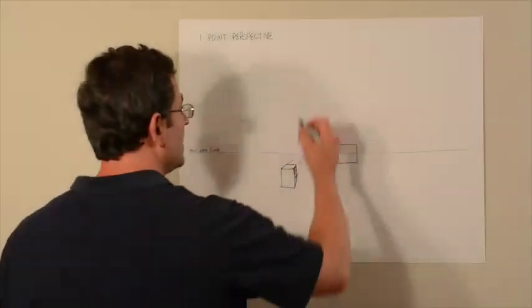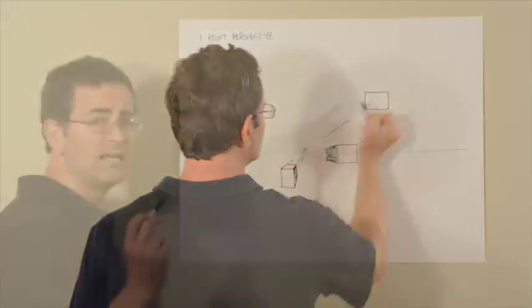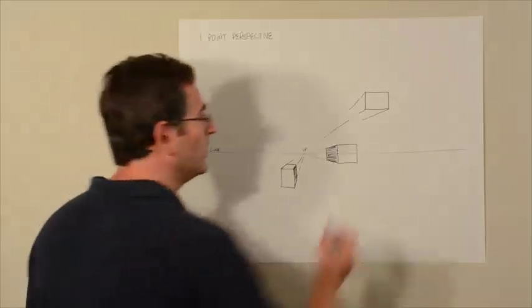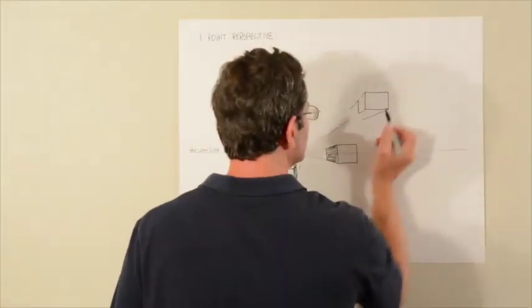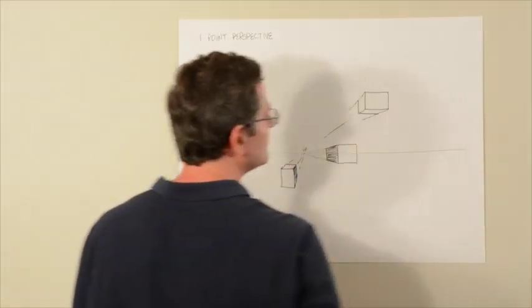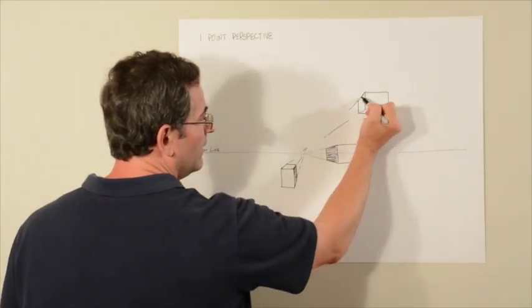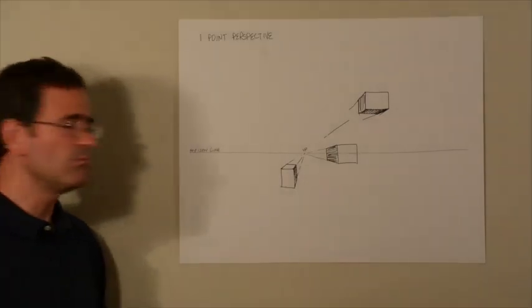What if it's above the horizon line? I don't have to draw the lines all the way there. I just have to aim them at that vanishing point. These lines are parallel. These lines are parallel. That's how simple one-point perspective is.